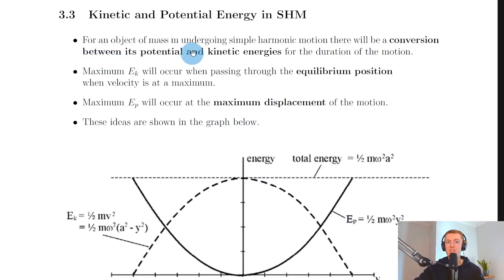For an object of mass m undergoing simple harmonic motion, there will be a conversion between its potential and kinetic energies for the duration of the motion. The maximum kinetic energy will occur when passing through the equilibrium position when velocity is at a maximum, whereas the maximum potential energy will occur at the maximum displacement of the motion.